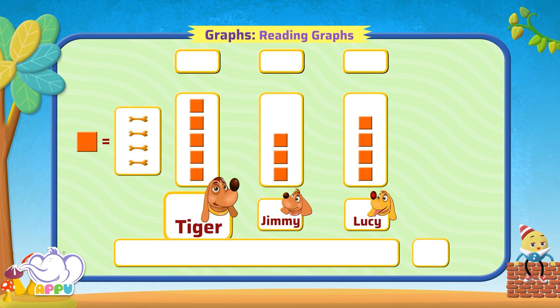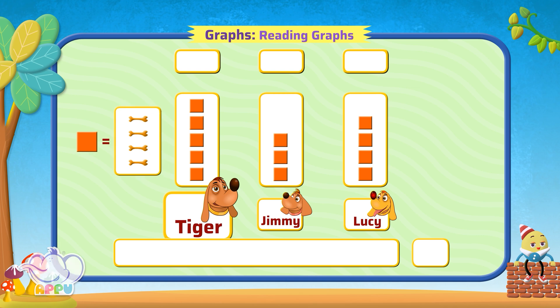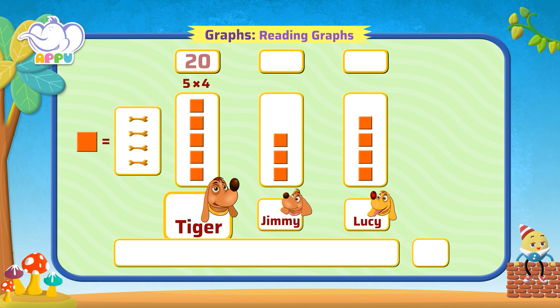There are five squares for tiger. Since one square represents four bones, tiger has five times four, that is equal to twenty bones.